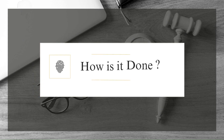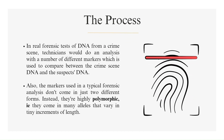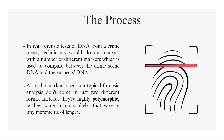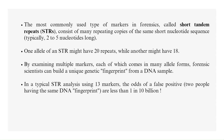In real forensic tests of DNA from a crime scene, technicians perform analysis with a number of different markers, which are used to compare crime scene DNA with the suspect's DNA. The markers used in typical forensic analysis are highly polymorphic — they come in many alleles that vary in tiny increments of length. The most commonly used type of markers in forensics, called short tandem repeats, or STRs, consist of many repeating copies of the same short nucleotide sequence, typically 2 to 5 nucleotides long.